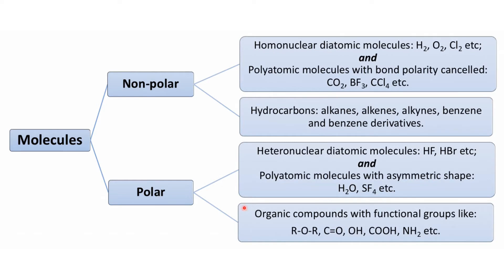Apart from hydrocarbons, there are some organic compounds which have certain functional groups, and due to these functional groups these molecules are polar. For example, ROR is an ether. Then organic compounds which have C=O can be aldehyde or ketone. Organic compounds which have an OH group are alcohols. Then there are carboxylic acids and amines. So these organic compounds are polar.